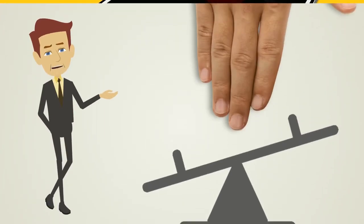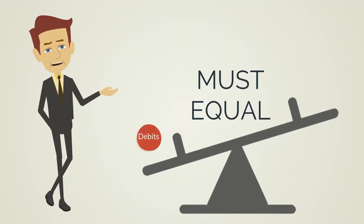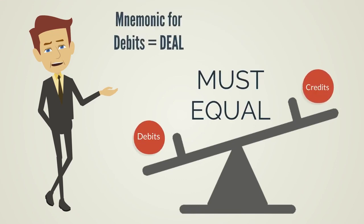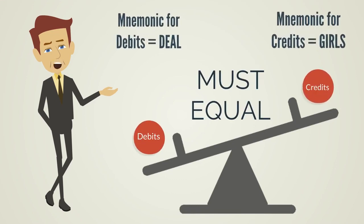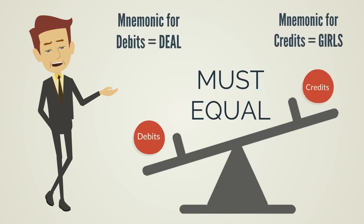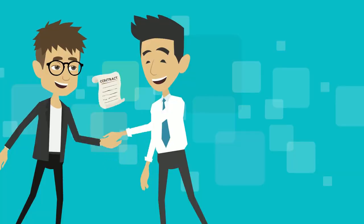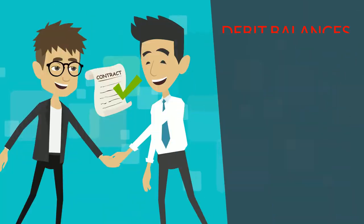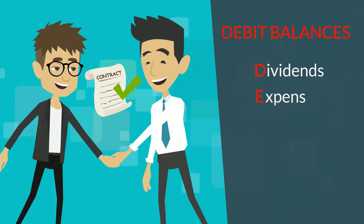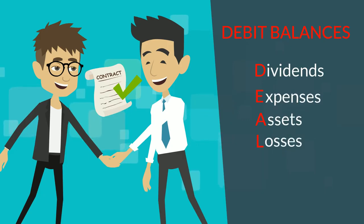Debits must always equal credits. There are general guidelines where accounts tend to have either a debit balance or credit balance. The mnemonic DEAL is one way to remember the debit balance accounts: Dividends, Expenses, Assets, and Losses.